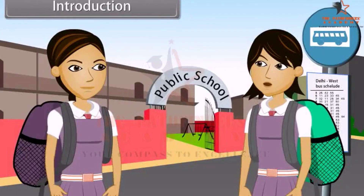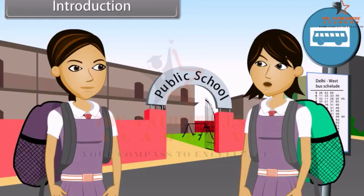Hey Neeta, have you ever wrapped a birthday gift? Yes, many times. That means you've covered the surface area of a polyhedron with wrapping paper. Have you ever poured yourself a glass of milk? Yes. That means you've filled the volume of a glass with liquid. I do not understand what you are saying. What is the surface area and the volume?